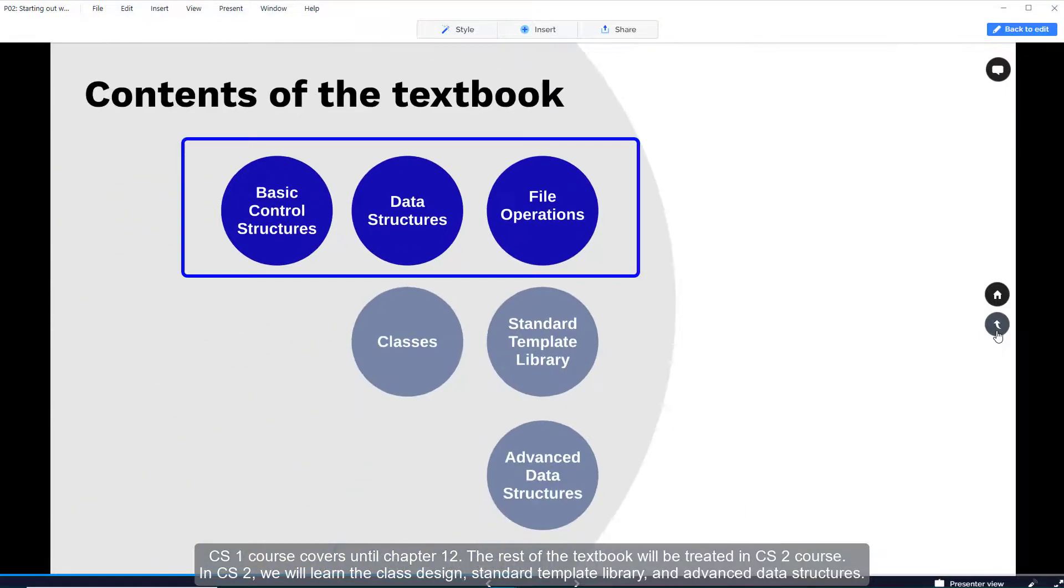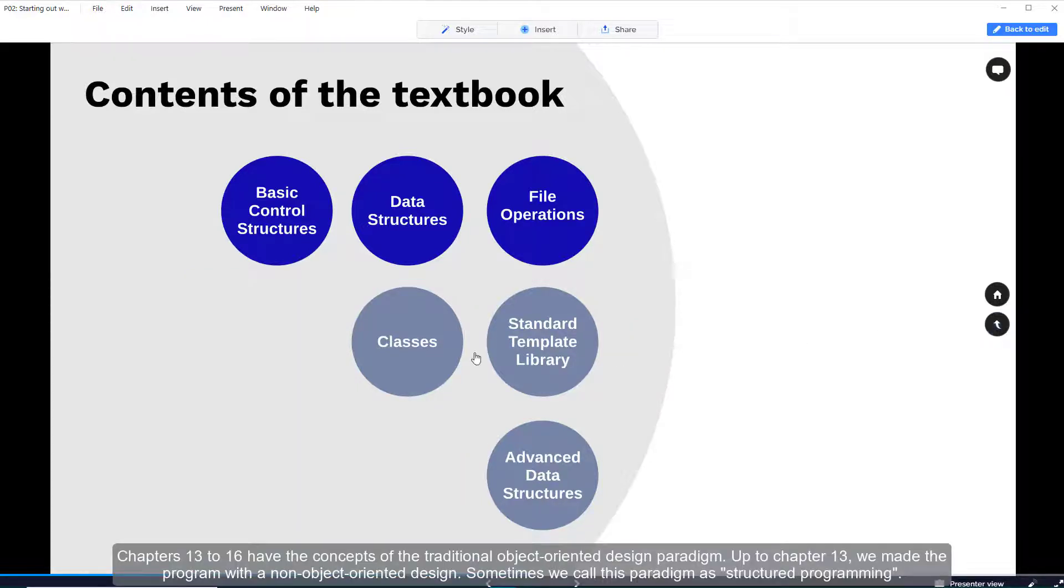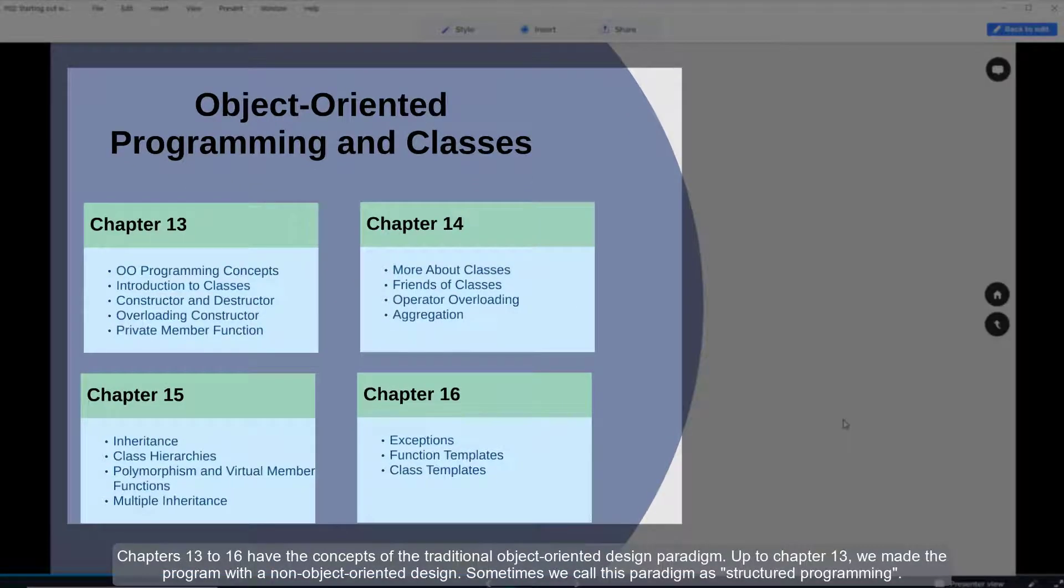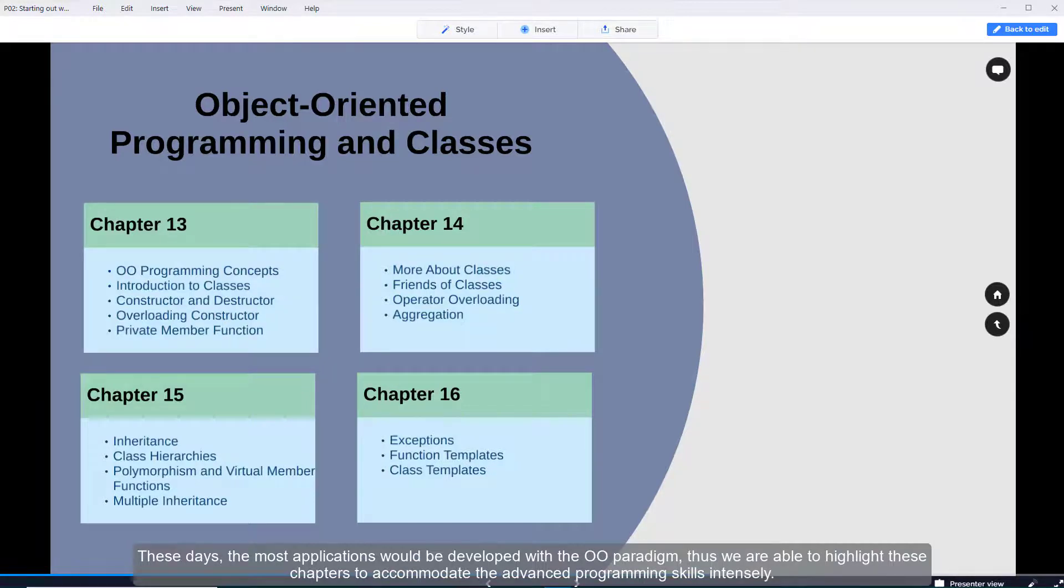CS1 course covers until chapter 12. The rest of the textbook will be treated in CS2 course. In CS2 we will learn class design, standard template library, and advanced data structures. Chapters 13 to 16 have the concept of traditional object oriented design paradigm. Up to chapter 13 we made programs with non-object oriented design. Sometimes we call this paradigm structured programming. These days most applications would be developed with OO paradigm. Thus we are able to highlight these chapters to accommodate the advanced programming skill intensely.